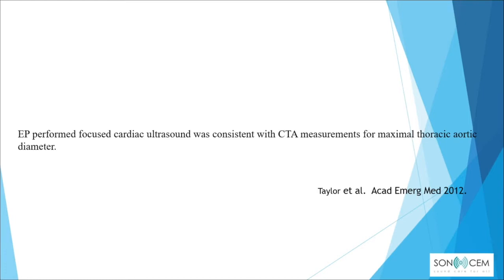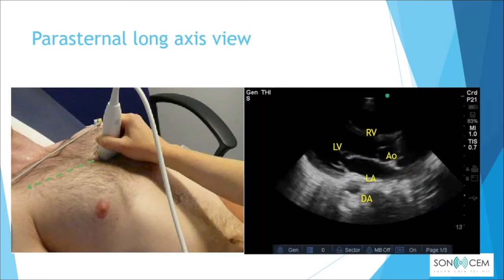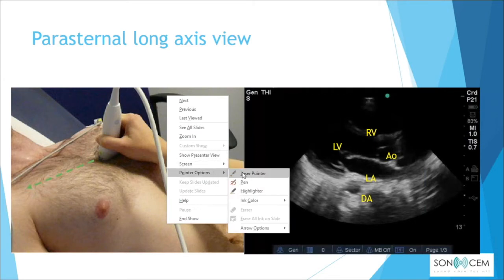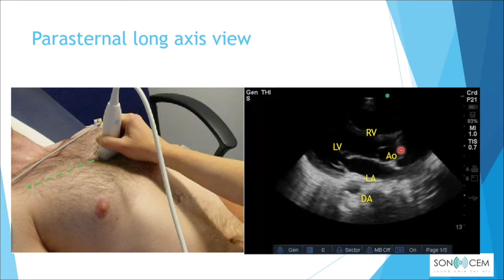To get a better diameter of the thoracic aorta, we continue with the parasternal long axis view — one of the easiest views to obtain. We still use the phased array probe. The patient can be in the supine or left lateral decubitus position, with the probe marker pointing towards the patient's right shoulder. The parasternal long axis view lies at the left sternal edge, anywhere between the second and fifth intercostal space. The structures seen include the right ventricle, left ventricle, left atrium, and descending aorta — but the main focus is the aorta itself.